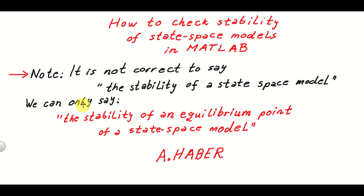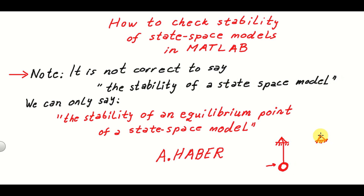To illustrate this, consider a pendulum example. We have a bar that can revolve around a point and at one end of the bar we have a ball. Obviously, this system has two equilibrium points. This is the first equilibrium point, and the second equilibrium point is illustrated here. The difference is that this equilibrium point is stable, however this equilibrium point is not stable.